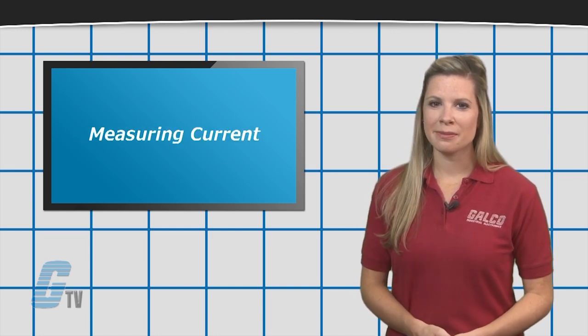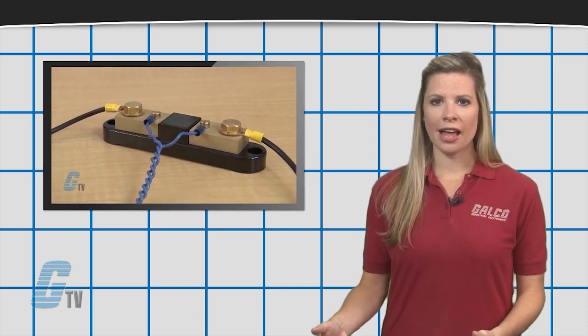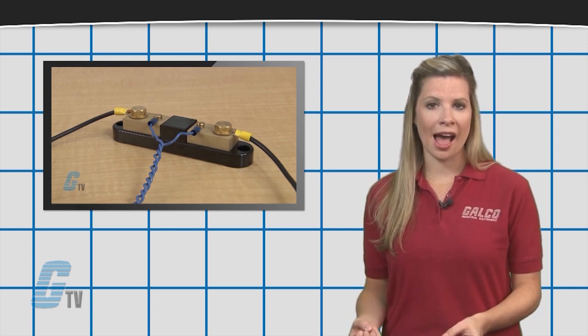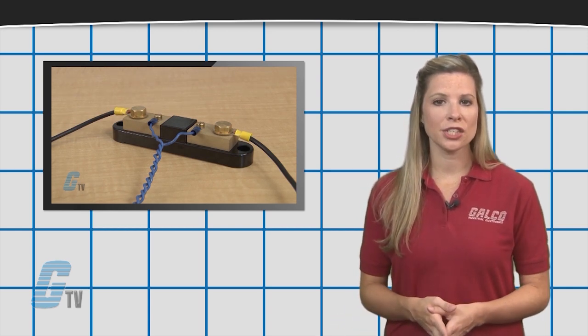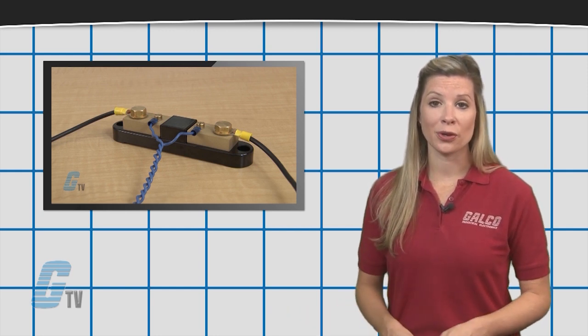Another method to measure current is through the use of a shunt and panel meter. A shunt can allow for a small sample to be taken from the current and then supply a panel meter with a manageable voltage reference that can be seen as a representation of the current.